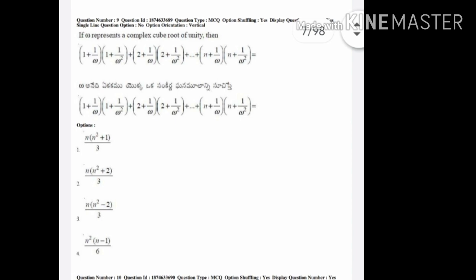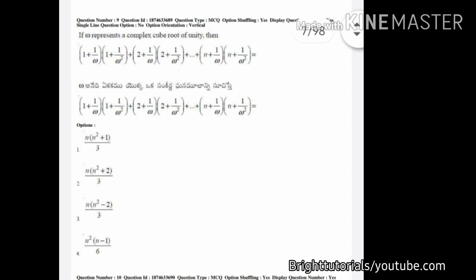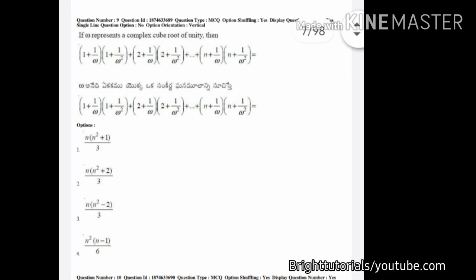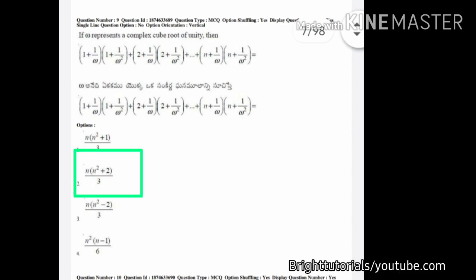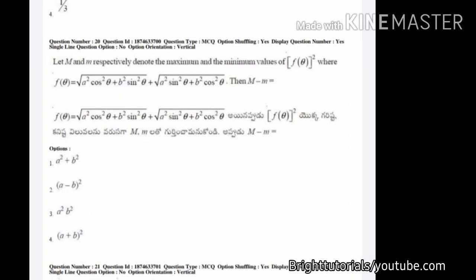Let's start with question number one. In this question you can see that option two and option three are the same — the only difference is the sign. In option two it is given as plus, and in option three it is given as minus. So mostly the correct answer will be between two and three. You can directly eliminate option one and option four and choose any one option between two and three. The correct answer here is option number two.